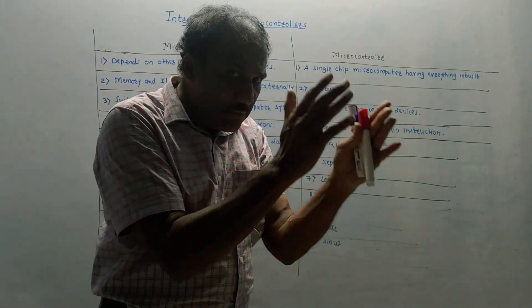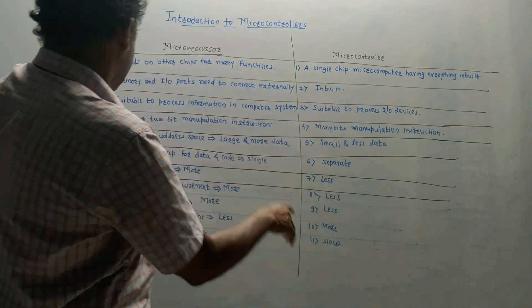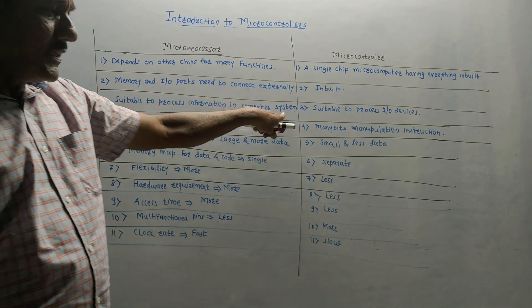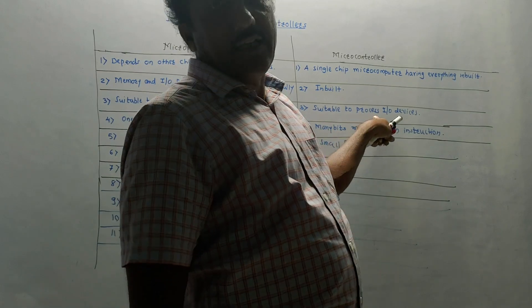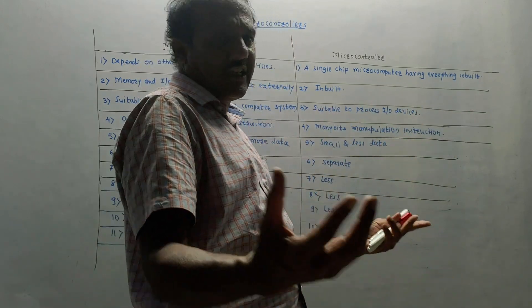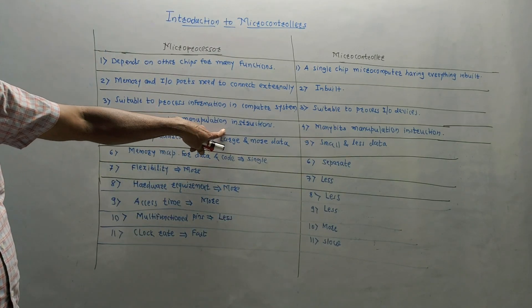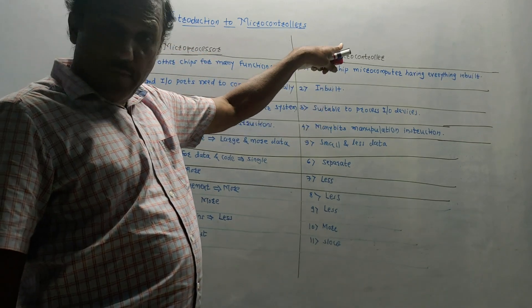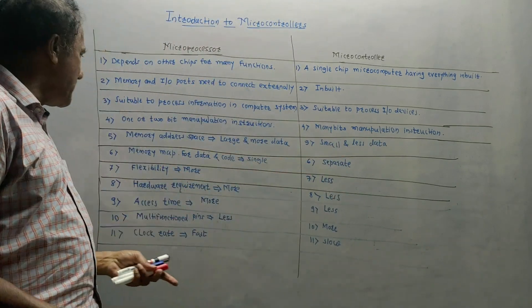Microcontroller is designed for a particular application. It is suitable to process information for input and output devices and for particular application design. One or two bit manipulation instructions are used for microprocessor, whereas microcontroller needs many bit manipulation instructions. Manipulation means making changes.